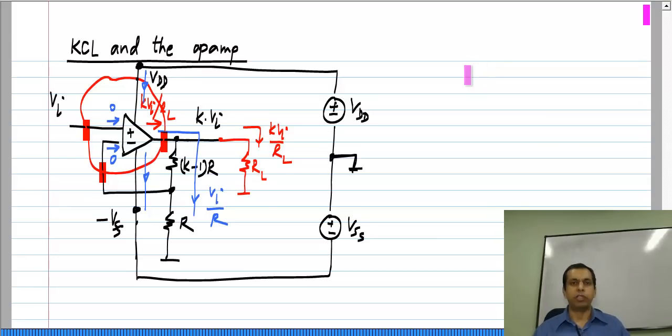Now, exactly how much current flows through the supplies depends on the internal details of the op amp, but there is a pretty simple model that we can use which I will discuss now.